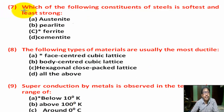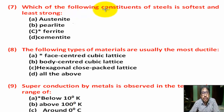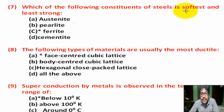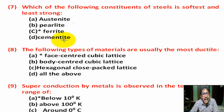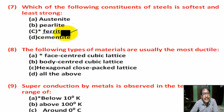Question number 7: Which of the following constituents of steel is softest and least strong? Option A: austenite. Option B: pearlite. Option C: ferrite. Option D: cementite. Correct answer is Option C — ferrite.